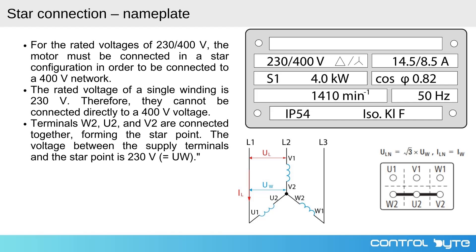The key point here is that the rated voltage of a single winding is 230 volts. Therefore, by connecting the windings in a star configuration, the voltage across each winding remains 230 volts even though the supply voltage is 400 volts.